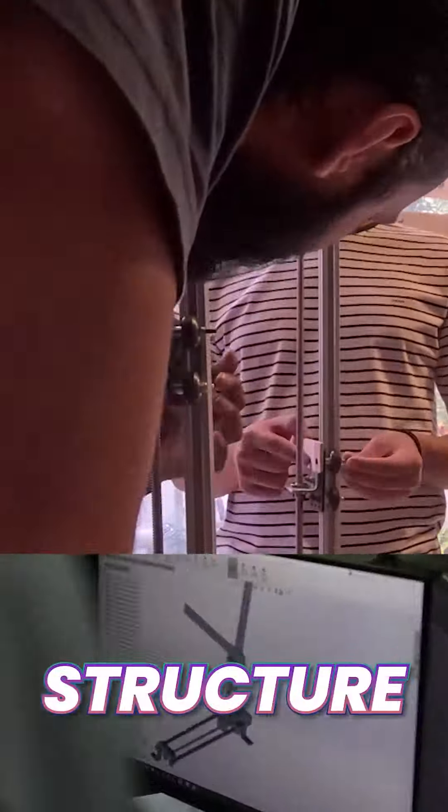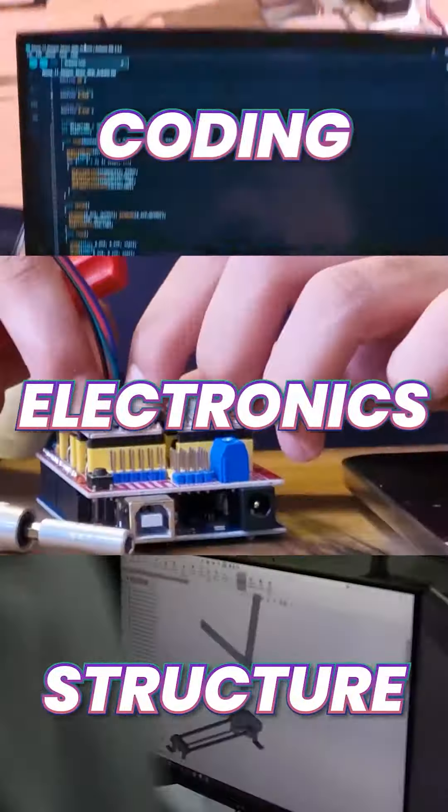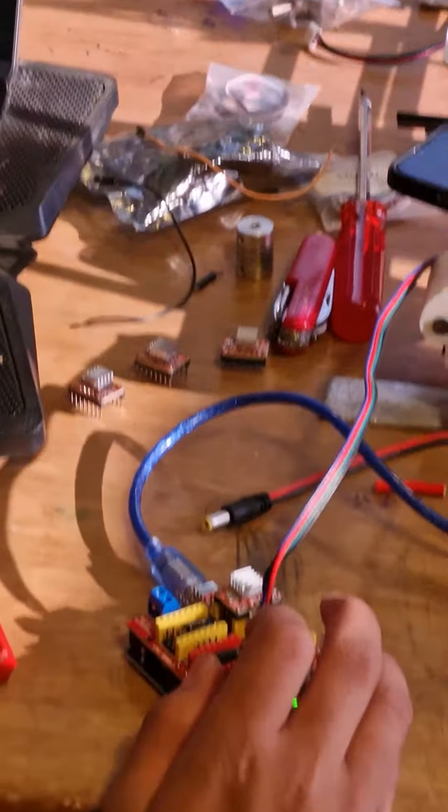The build is divided in three stages: structure of the cutter, enhancing with electronics and feeding it with code to function. Let's see how they make the first phase.